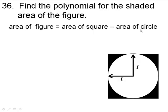Now to find the area of the square, we need to find out how long one of these sides is. This is r and this is r, so all the way across this is going to be 2r.